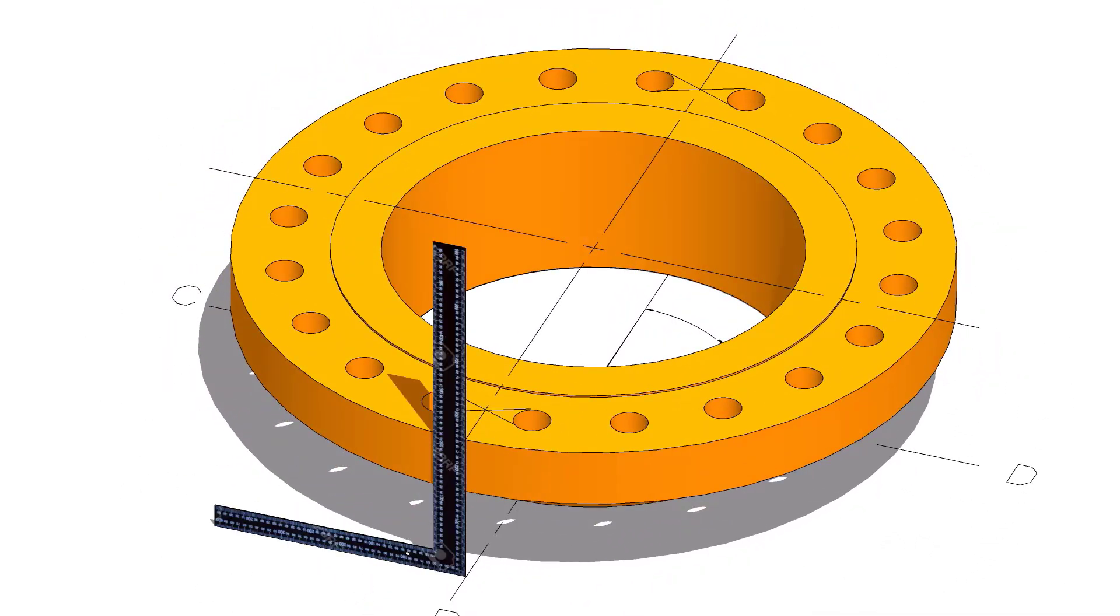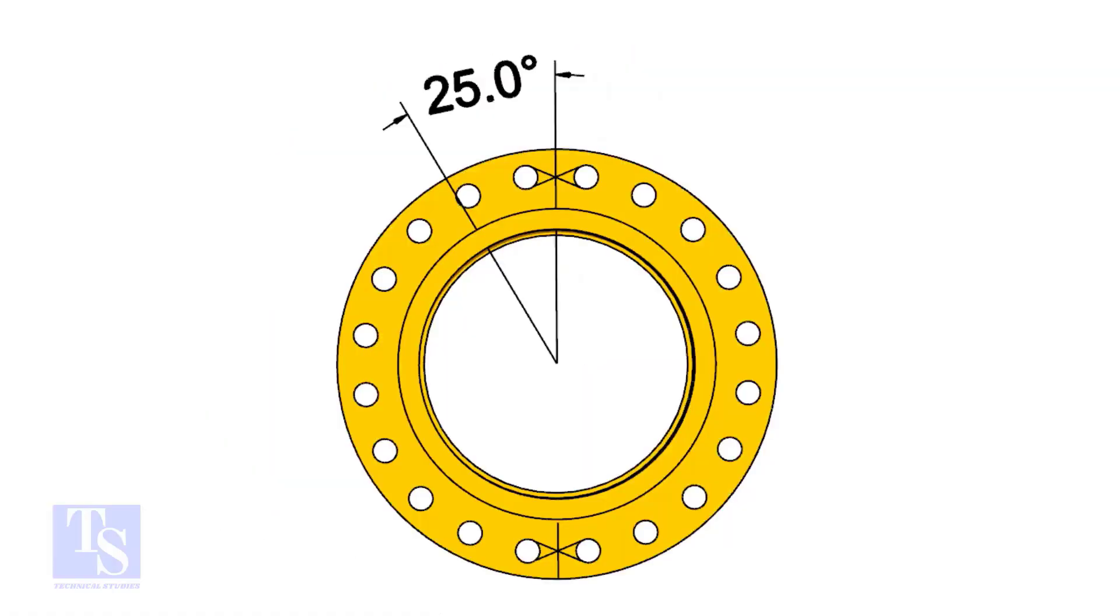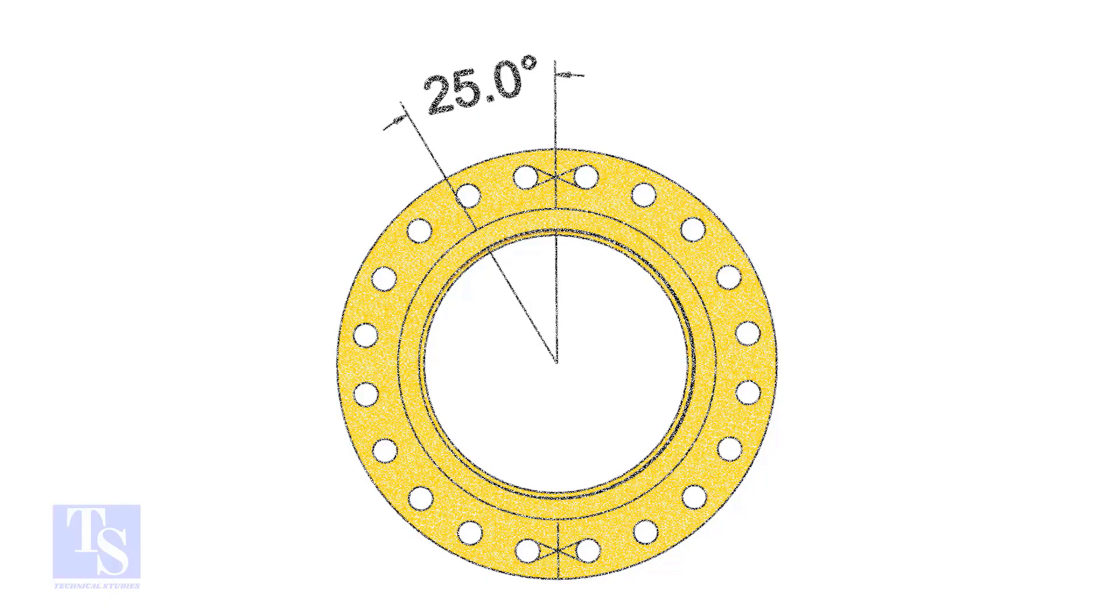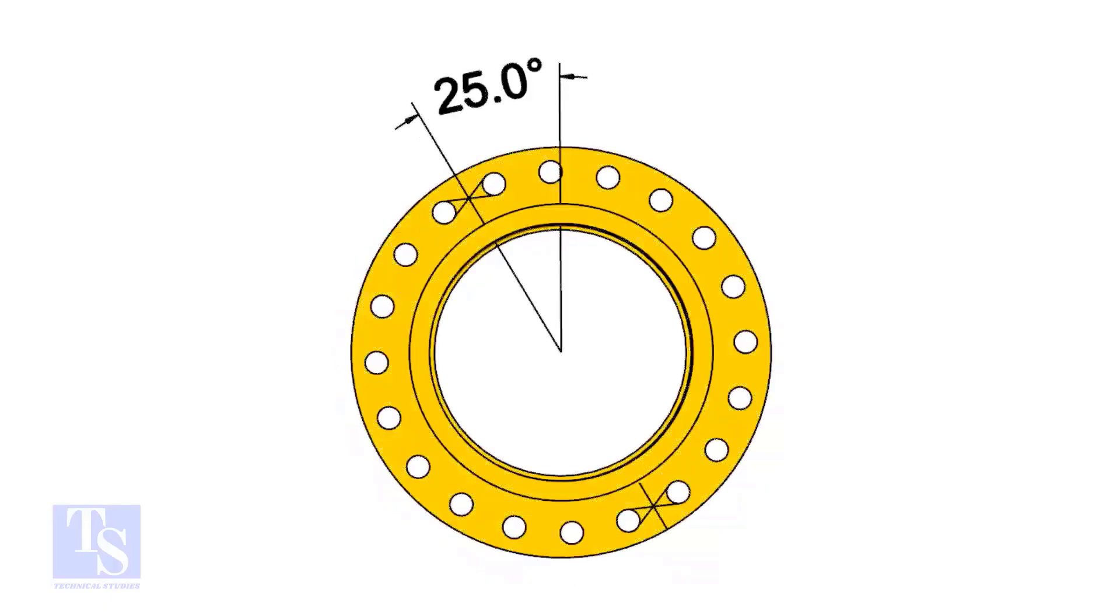The pipe and the flange size is 16 inch and the flange will rotate 25 degrees anticlockwise. Hope you all know the difference between clockwise and anticlockwise rotation.